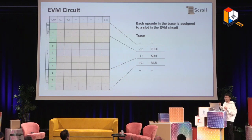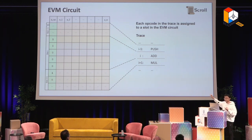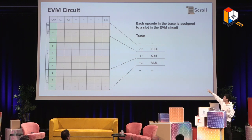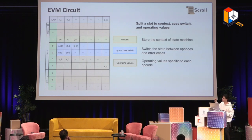Here is the EVM circuit layout. There are multiple slots. In each slot you fill up some opcode and some opcode-related witness. For example, in this circuit, slot i minus one is push, slot i is add, and slot i plus one is multiplication. For each slot you fill up some opcode, and let's take a deeper look at what's within each slot and what's the context there.